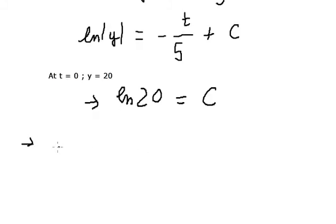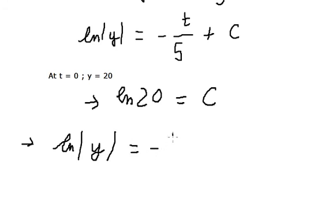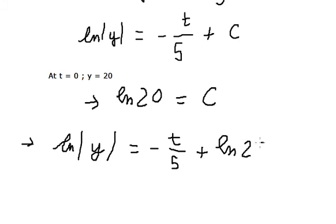Substituting C back, we get ln of the absolute value of y equals negative t over 5 plus ln(20).